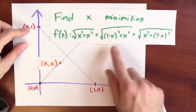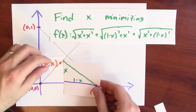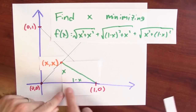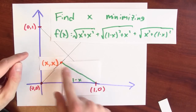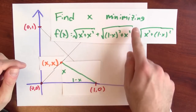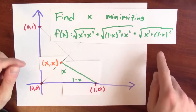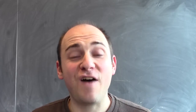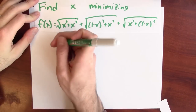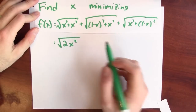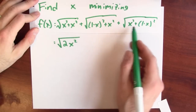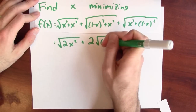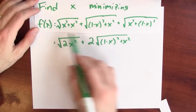What about the next term — the square root of (1 minus x) squared plus x squared? Look at this little right triangle: one leg has length x and the other has length (1 minus x), so the hypotenuse — the distance from (x,x) to (1,0) — is the square root of (1−x)² + x². The last term, the square root of x² + (1−x)², measures the distance from (0,1) down to (x,x). I can simplify: the square root of x² + x² is just the square root of 2x², and the last two terms are identical, so f equals the square root of 2 times x plus 2 times the square root of (1−x)² + x².